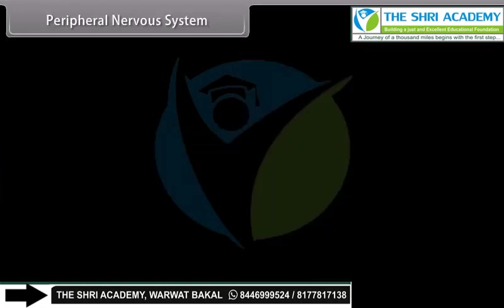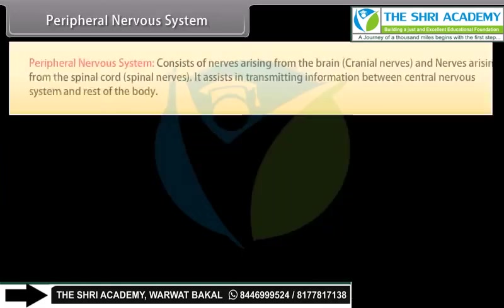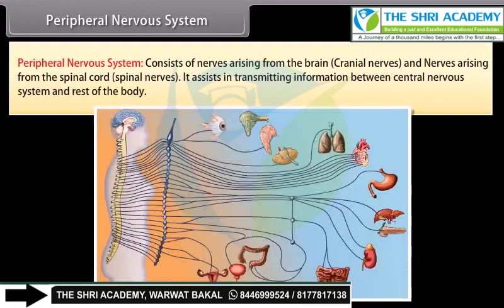The peripheral nervous system consists of nerves arising from the brain, called cranial nerves, and nerves arising from the spinal cord, called spinal nerves. It assists in transmitting information between the central nervous system and the rest of the body.